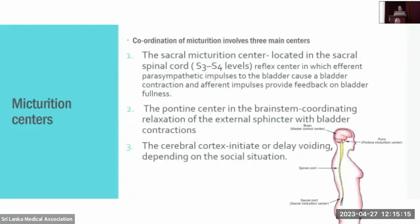To maintain the micturition process, there are several coordinating centers. The sacral micturition center is located in the sacral region S3 to S4. It is a reflex center where efferent parasympathetic impulses to the bladder cause bladder contraction, and afferent impulses provide feedback regarding bladder fullness. There is also a center in the pontine region of the brainstem, which mainly performs coordination — since the bladder wall must contract and the internal sphincter must relax simultaneously. That coordination is mediated by the pontine center. The cerebral cortex initiates or delays voiding depending on social context.